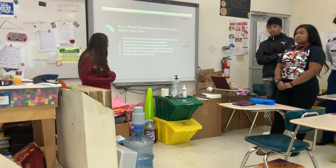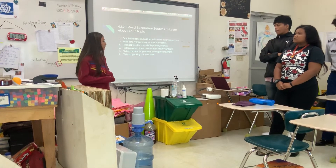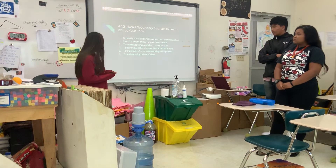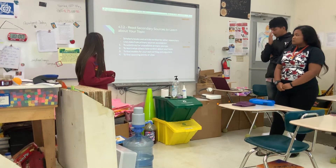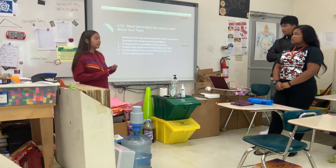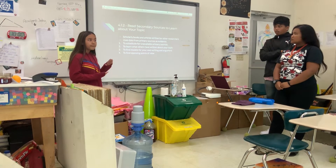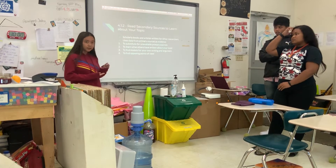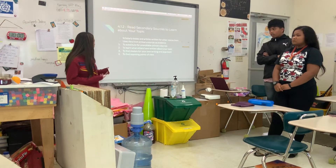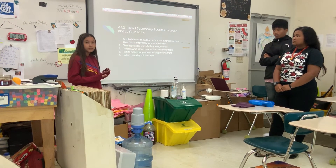Number 2: to learn what others have written about your book. Basically, you look at other articles and compare their evidence to your book. Number 3: to find models for your own writing and art. You basically have to have the same structure — for example, if an article has short paragraphs, you most likely have to have short paragraphs. And number 4: to find closing points of view. You have to look for other perspectives, like how other people think about the article.